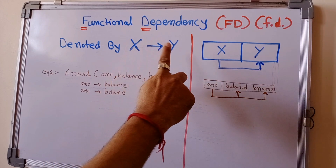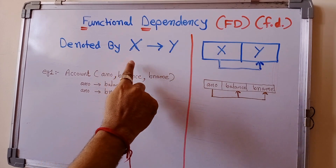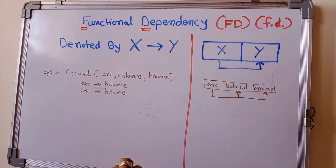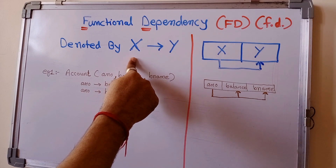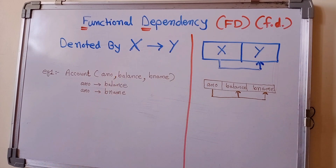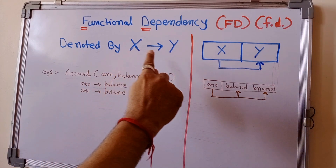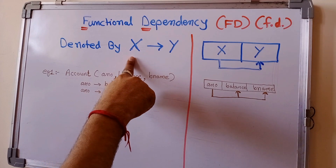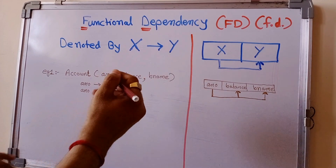X is the set of attributes whose value can determine the value of Y. If we supply all the values of X attributes, we will get the value of Y. For example, if we supply a role number we can get the name, and if we supply a role number we can get the age.